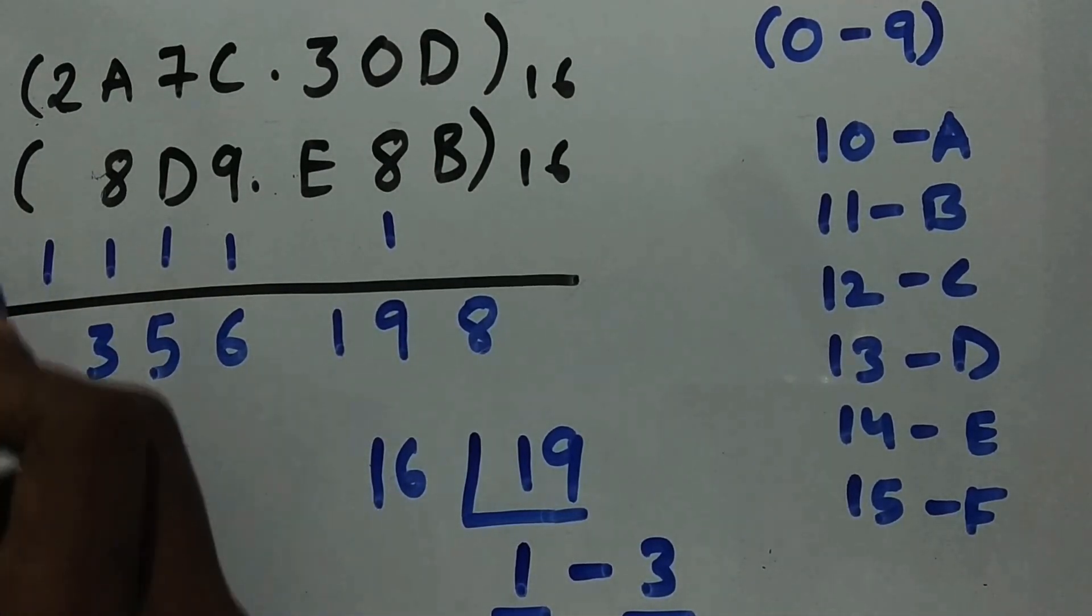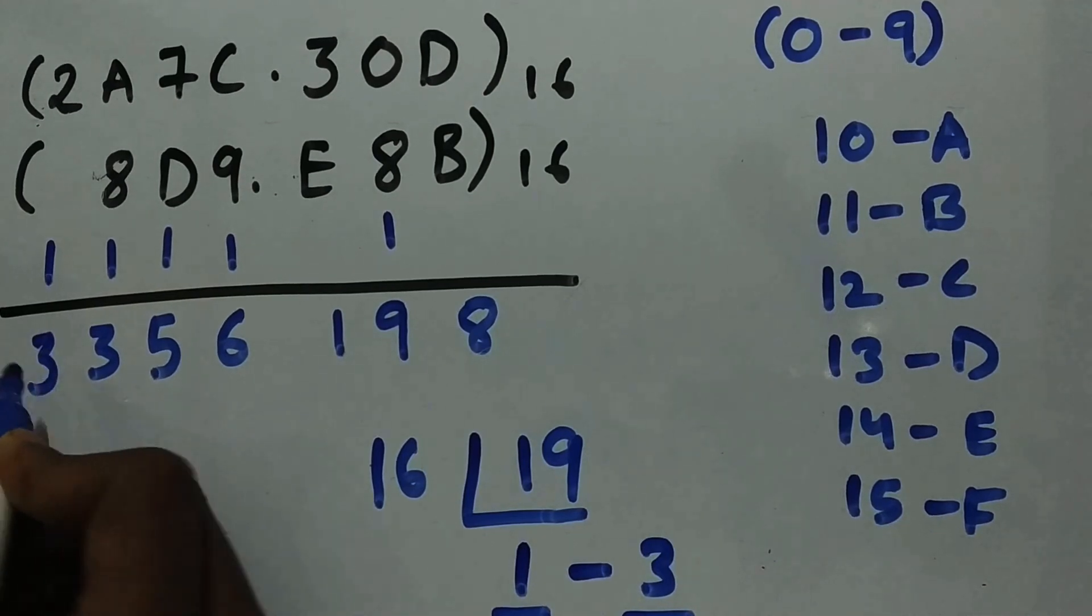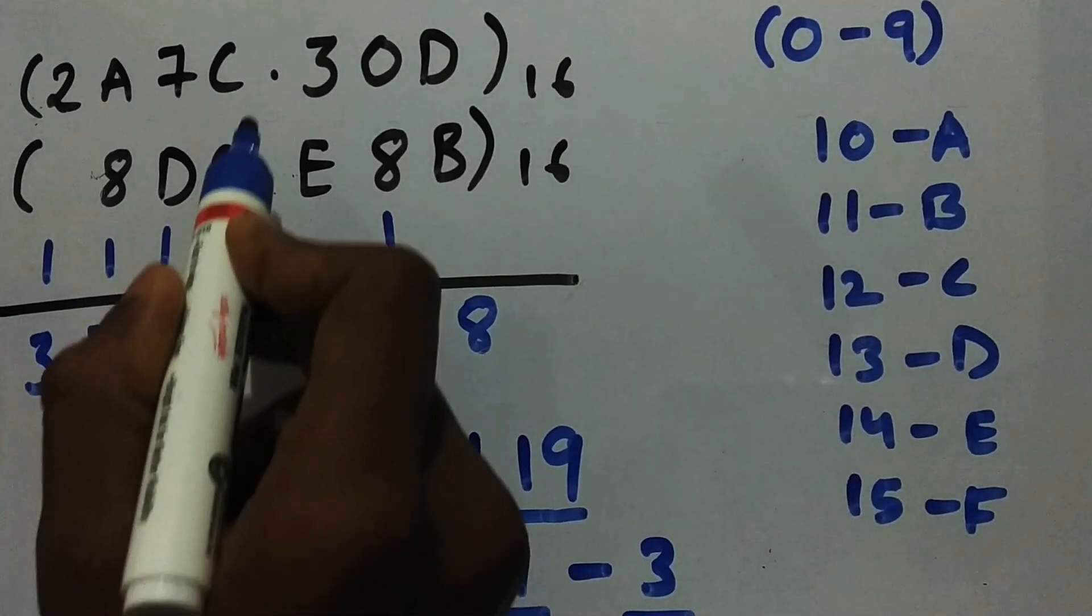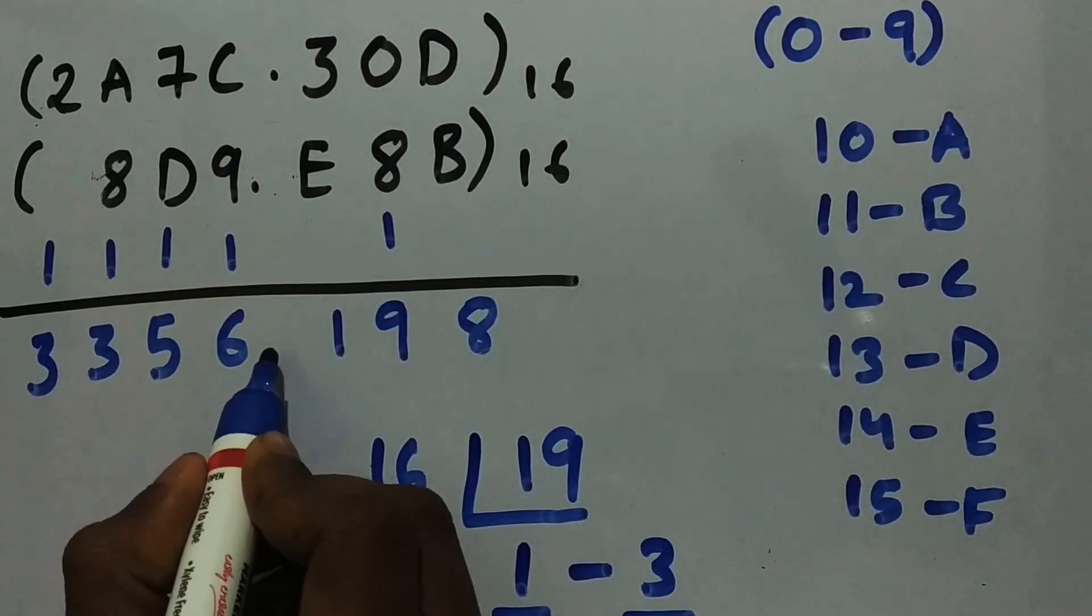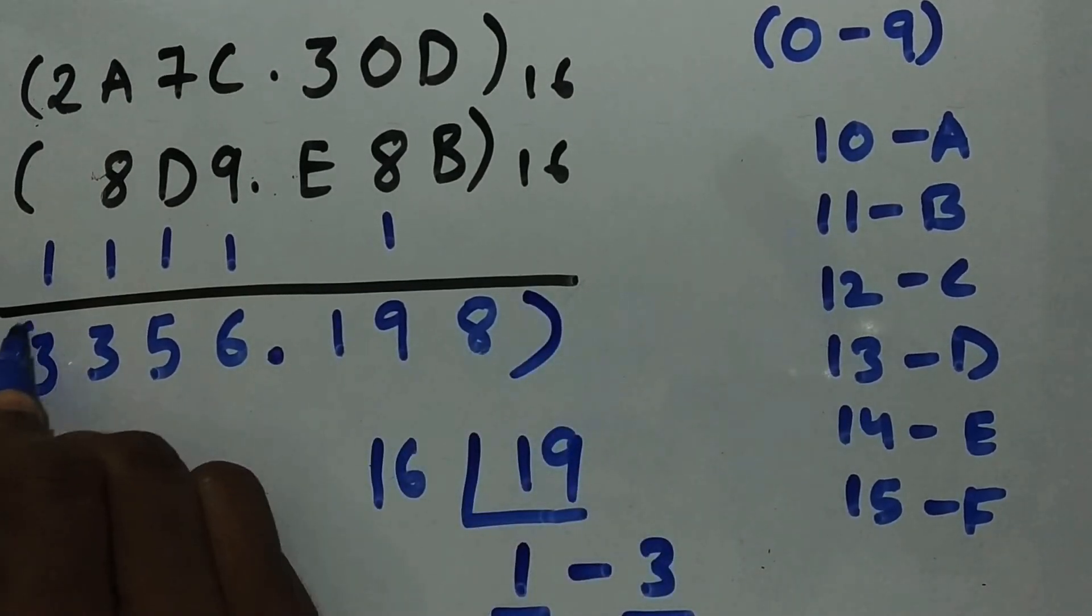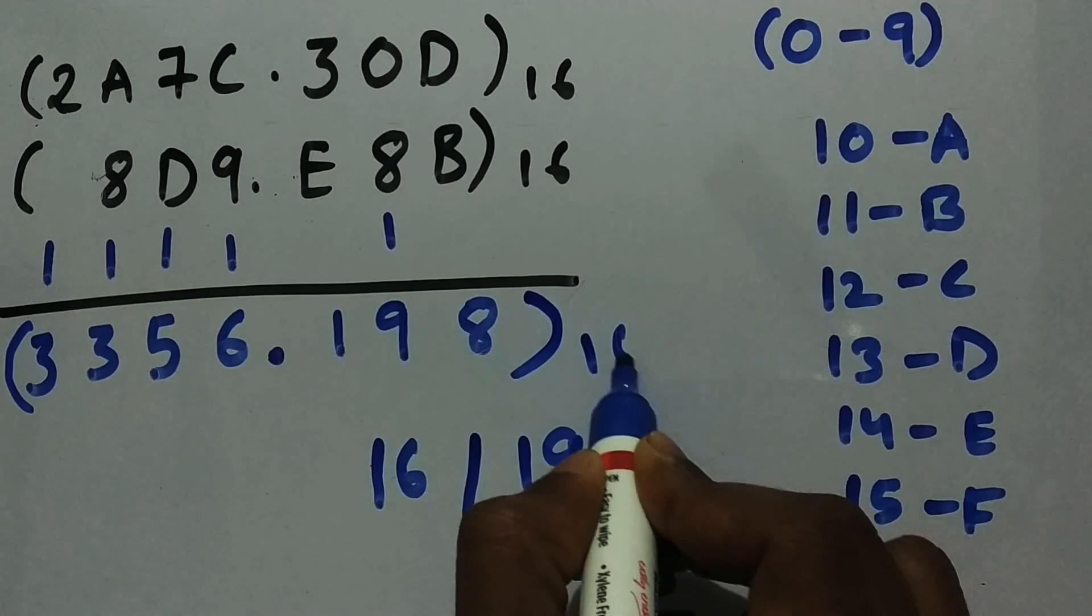So 2 plus 8 plus 1: 2 plus 8 is 10, plus 1 is 11, which is B. And now your answer is finished and this is in hexadecimal. Don't forget that one more point: there's a decimal point over here. Keep the decimal point as it is in the place, and this is your answer in hexadecimal. I hope